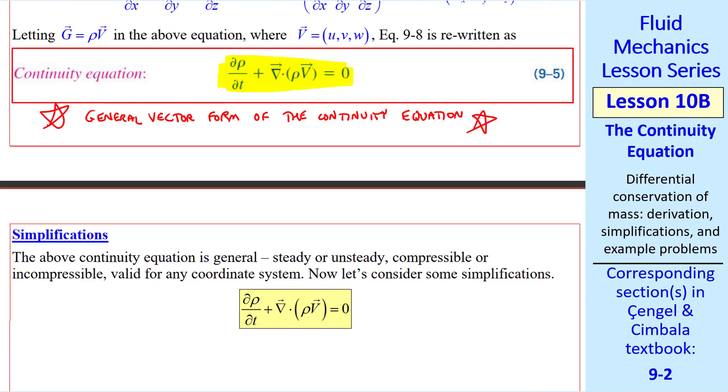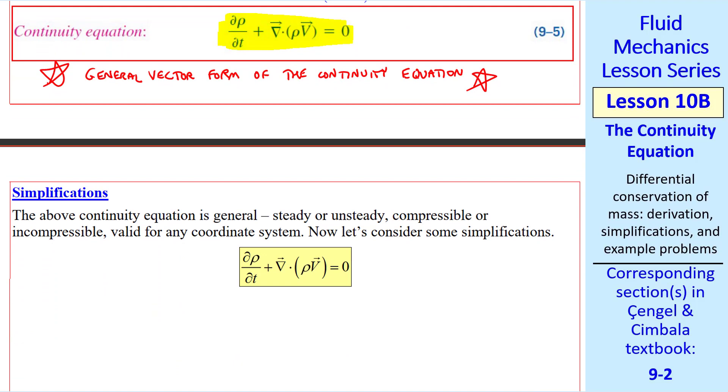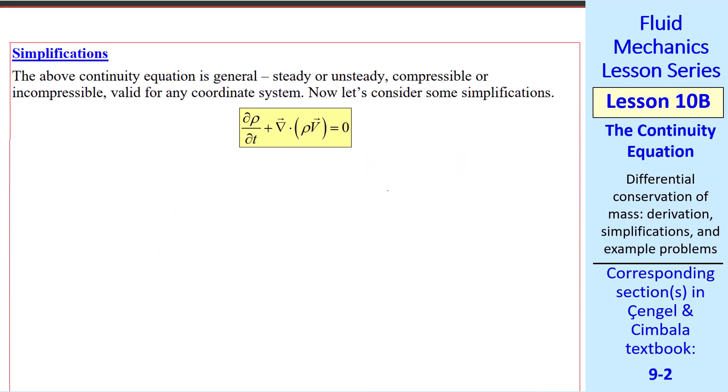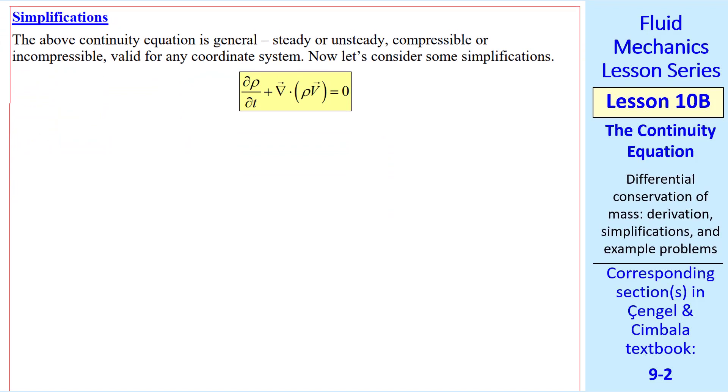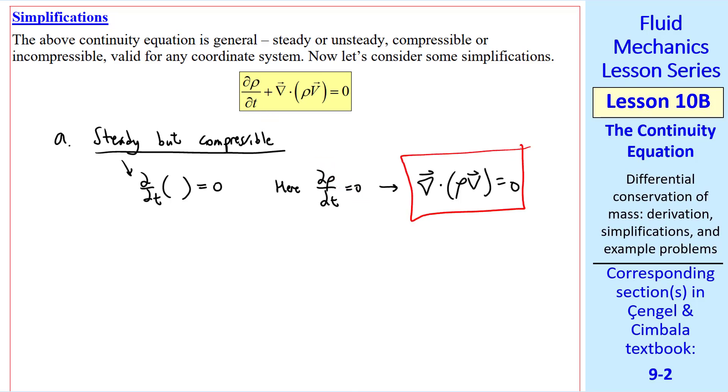Now let's look at some simplifications. I repeated the equation here. This equation is general, steady or unsteady, compressible or incompressible. And it's valid for any coordinate system. Let's look at some simplifications or some special cases. Suppose the flow is steady but compressible. Well, steady implies that del del t of anything is zero. So here, del rho del t, this term, is zero. So we get del dot rho v equals zero.